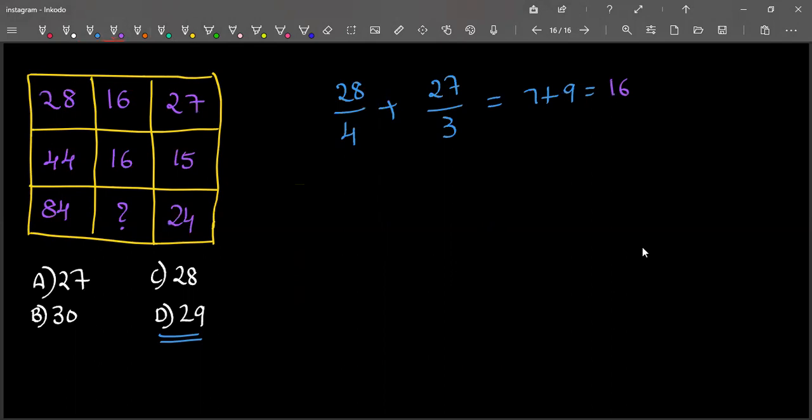Next, the same way divide 44 by 4 and divide 15 by 3. 11 plus 5 which is 16.